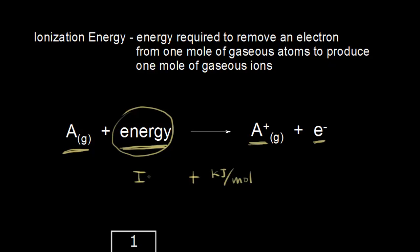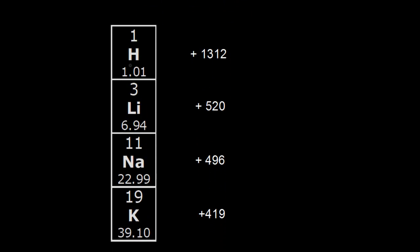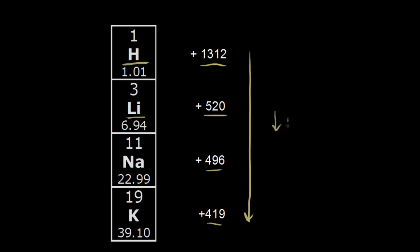In this video, we're only going to be talking about the first ionization energy, IE1. Let's look at some actual ionization energies for elements in group one. For hydrogen, it would take 1,312 kilojoules per mole of energy to pull an electron away. For lithium, it would take about 520 kilojoules per mole. As we go down, sodium would be 496 and potassium would be 419. There is a definite decrease in ionization energy as we go down a group in the periodic table, so it must be easier to pull an electron away.